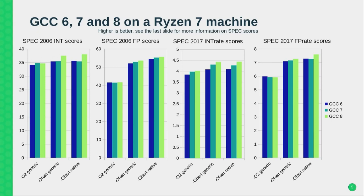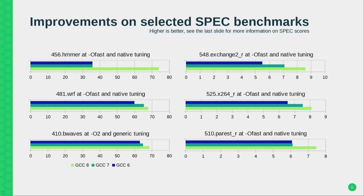SPEC 2017 numbers have improved even more, especially the integer numbers. One reason is that the suite is fairly new — we've only recently started looking into it — meaning there is still room for improvement. I will be mainly talking in the first part of this presentation about six specific improvements. The most impressive in terms of numbers and graphs is the HMMER benchmark, and all of them improved at one or more optimization combinations quite a bit.